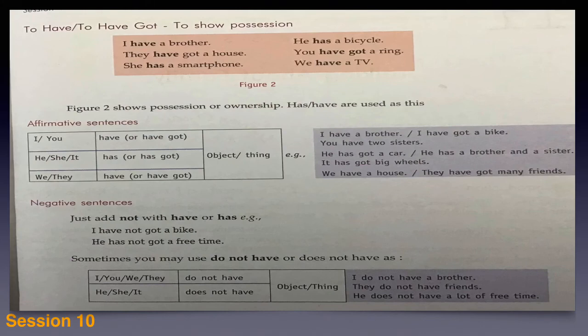Let's move to the next one: has, have, and have got. Here we will see the position of ownership by using has or have. The example sentences are: I have a brother, they have got a house, she has a smartphone, he has a bicycle, you have got a ring, we have a TV.